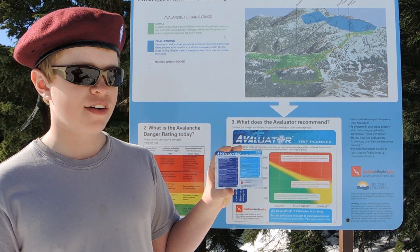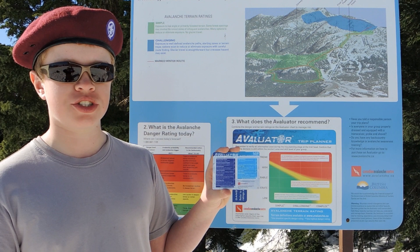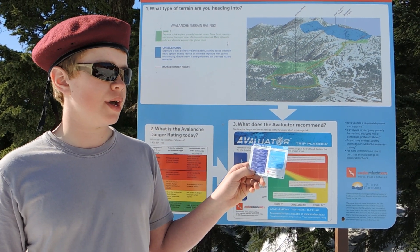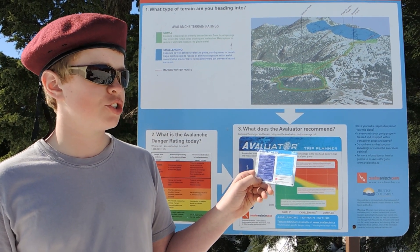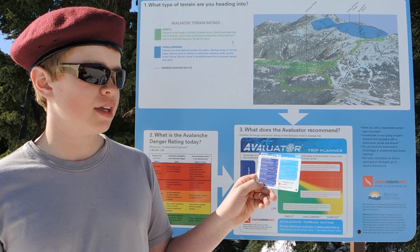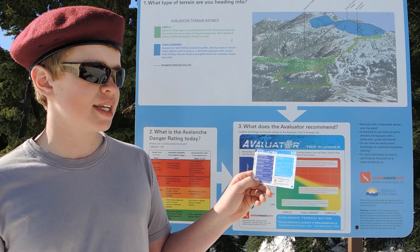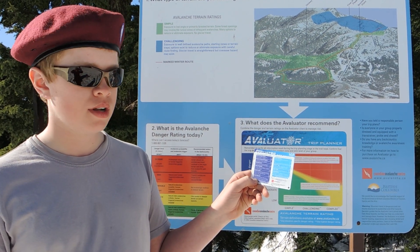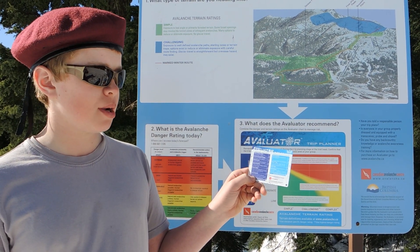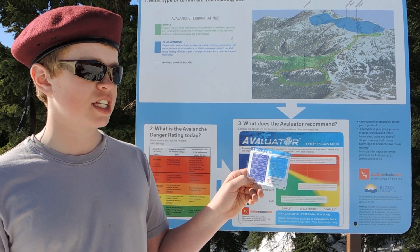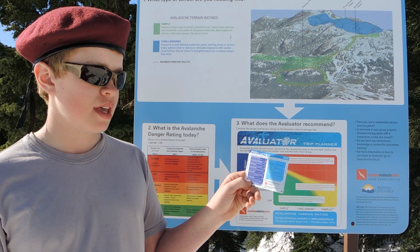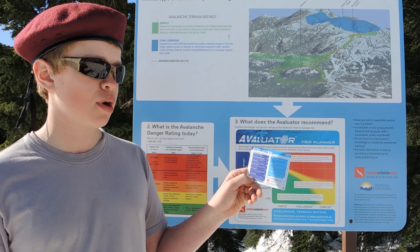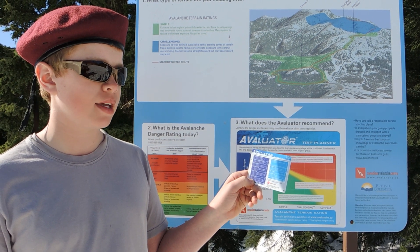Let's look at the avalanche conditions questions first. Question number one: regional danger rating — is the avalanche danger rating considerable or higher? Question number two: persistent avalanche problems — is there a persistent or deep persistent slab problem in the snowpack?